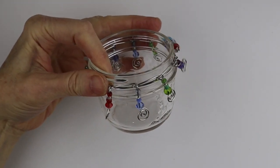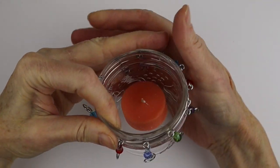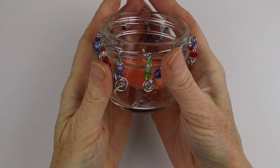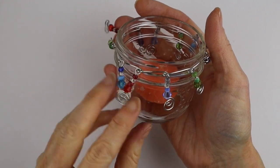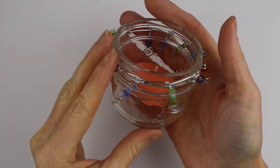So here's the finished candle holder. You just have to pop the candle inside, and like I said, you can embellish it with any kind of danglies that you like.